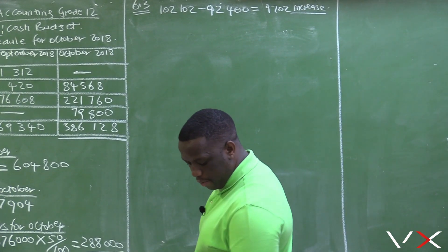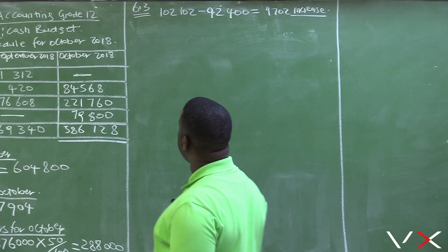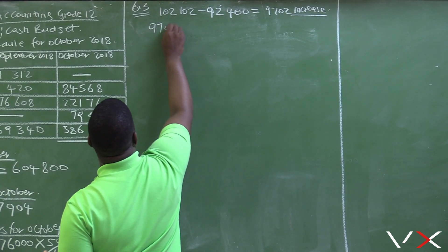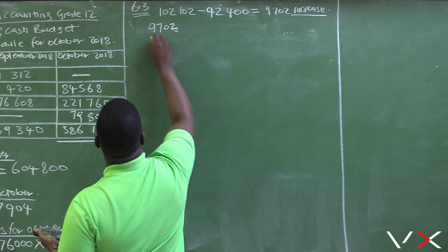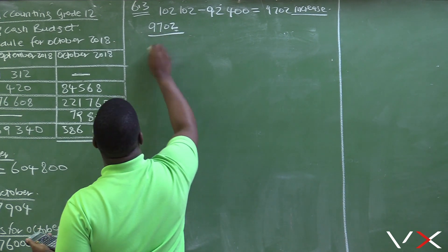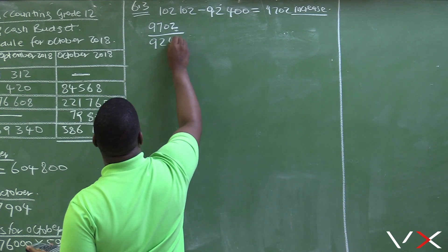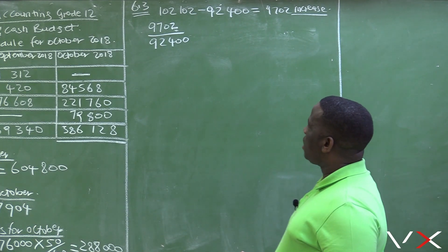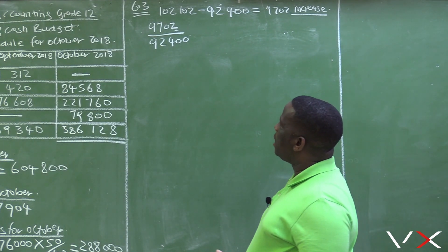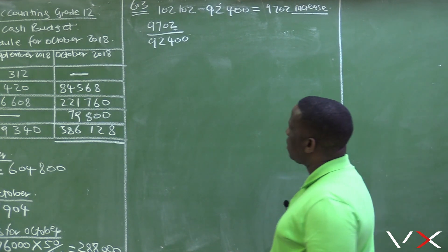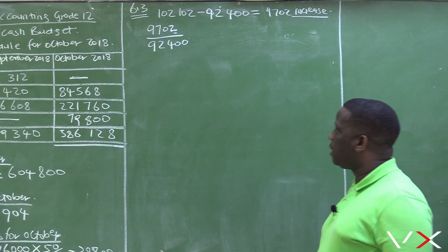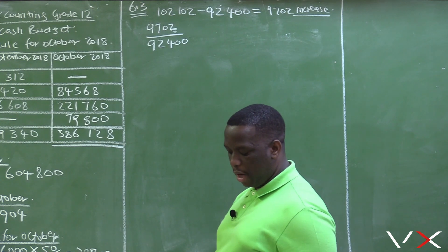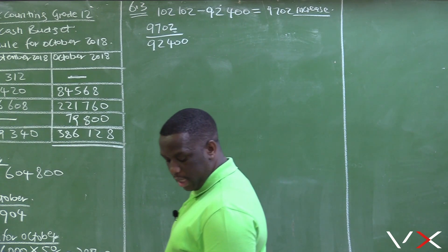But the question is not asking for the increase — it's asking for a percentage increase. The percentage increase is calculated as the increase of $9,702 over the amount before the increase, which is $92,400. Some students make the mistake of dividing the increase by the amount after the increase — that is wrong. You need to take your increase and divide it by the amount before the increase, which is $92,400, the salary for September.